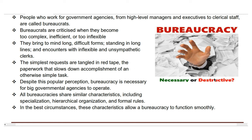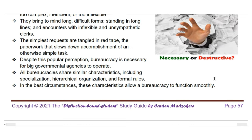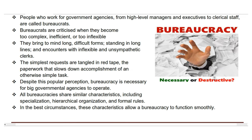The simplest requests are tangled in red tape — the paperwork that slows down accomplishment of an otherwise simple task. Despite this popular perception, bureaucracy is necessary for big governmental agencies to operate. All bureaucracies share similar characteristics including specialization, hierarchical organization, and formal rules. In the best circumstances these allow a bureaucracy to function smoothly. Examples of bureaucracy contributing to public sector failure include: delays in decision-making; red tape and regulations that create barriers for businesses hindering economic activities and innovation; and inefficiency and waste resulting in misallocation of resources and unnecessary expenditures leading to financial waste.